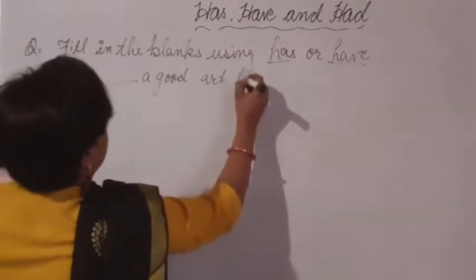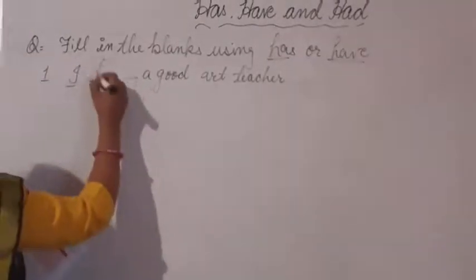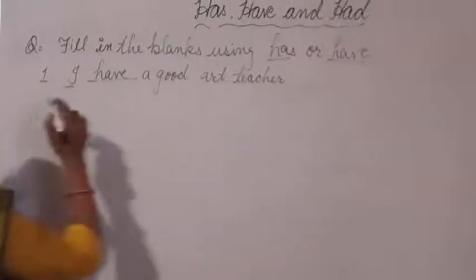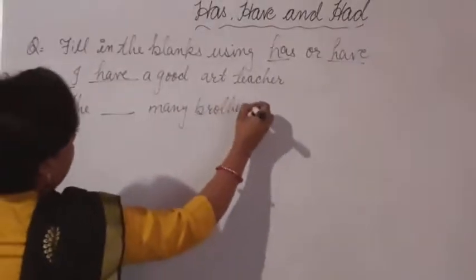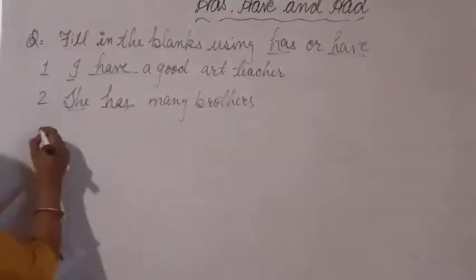First question: 'I have a good art teacher.' Here, I is the subject and it indicates a plural subject, so we use have. Second: 'She has many brothers.' Here, she is the subject — she is singular — so we use has.